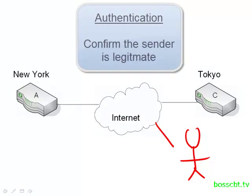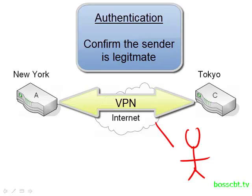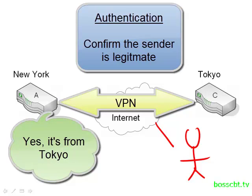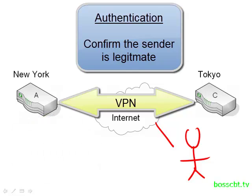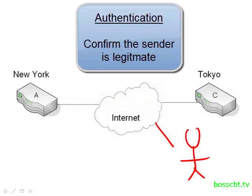The second thing we get is authentication, and that simply means that we're able to confirm that the sender of the data is legitimate and not some imposter. So when New York receives packets from Tokyo over the VPN, New York has the ability to authenticate that data to make sure that it did originate from Tokyo and not from somebody else who's trying to send maybe some bad information.